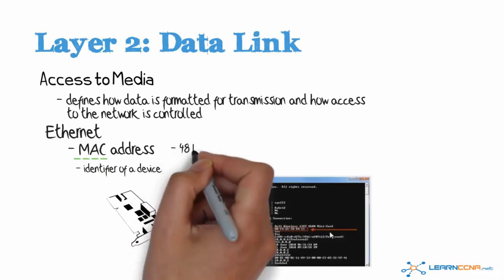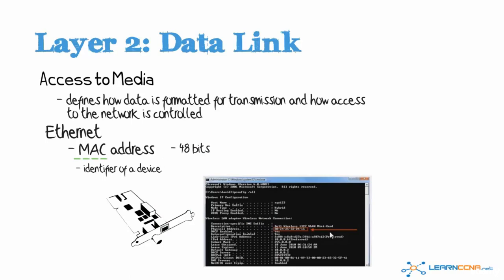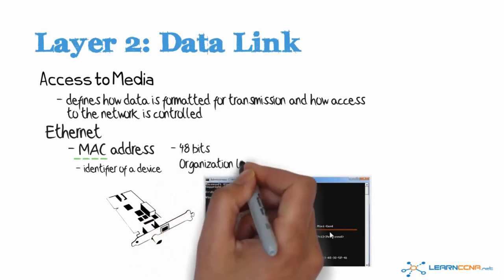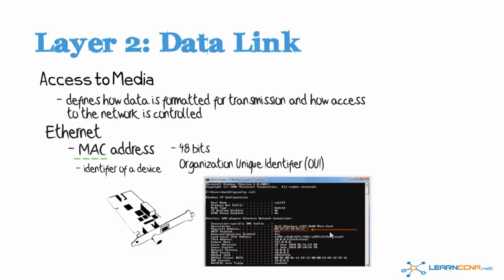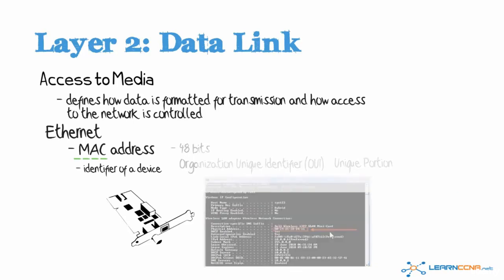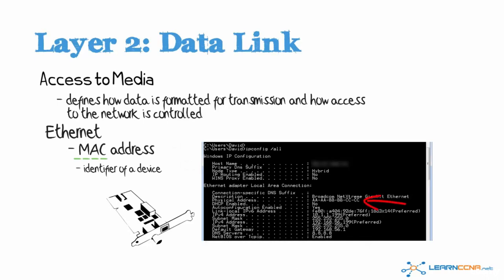MAC addresses are 48 bits in length, and they're broken up into two parts. We have what is called the organization unit identifier, or OUI, and then a unique portion for this specific network card. MAC addresses should be unique, so the combination of vendor, or OUI, and a unique value should make the MAC address on a NIC unique. On my PC, I can use the command ipconfig /all to view the MAC address of my network interface card.